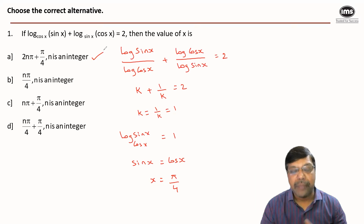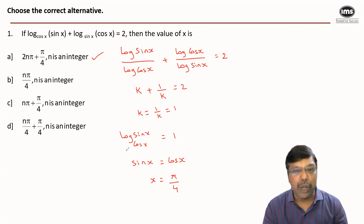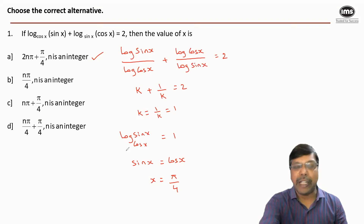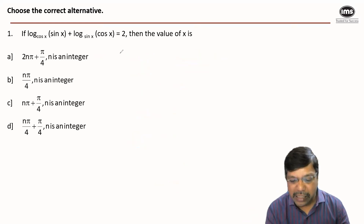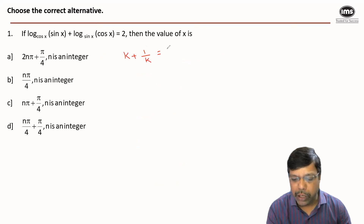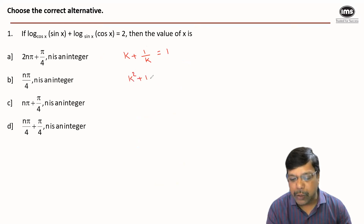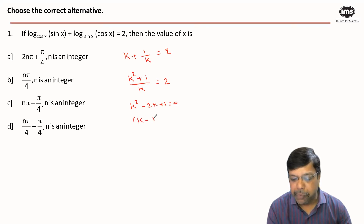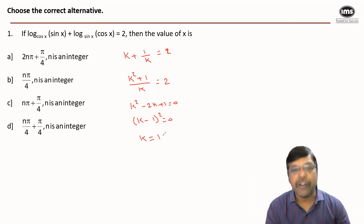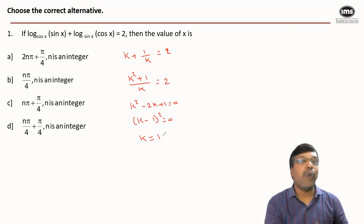In case the student hasn't spotted the k + 1/k = 2 shortcut, let me show the conventional method. Writing k + 1/k = 2 leads to the quadratic k² - 2k + 1 = 0, or (k - 1)² = 0, which gives k = 1. This is the same result as before.